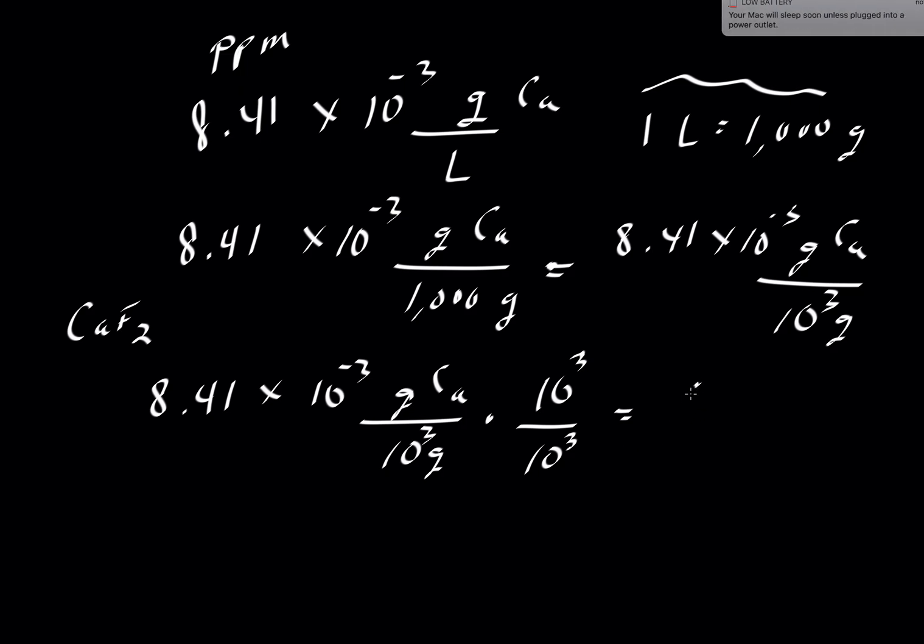10 to the 3 times 10 to 3 is 10 to the 6. So we have 8.41 grams of calcium per 10 to the 6 grams of solution. So that's our parts per million. We've got 8.41 parts per million calcium.